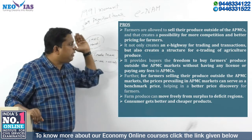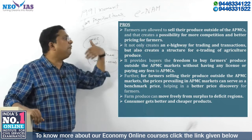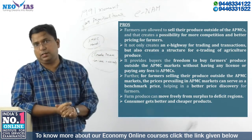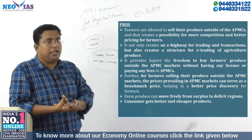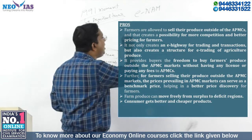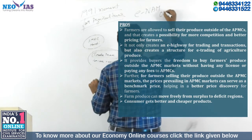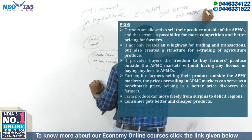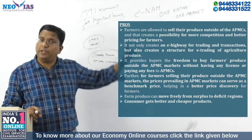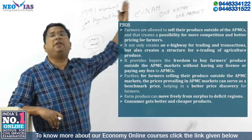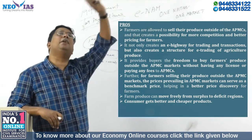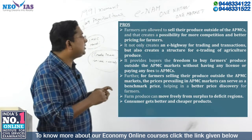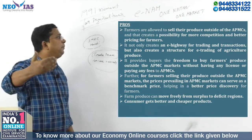It also creates an electronic highway or e-highway for trading and transaction, and a new structure has been created for e-trading of agricultural produce. An important point: the basic aim of this law is to create 'One Nation, One Market' for agricultural produce — to have a single market for agricultural produce over a period of time. This new electronic platform can help in creating one market for agricultural produce.